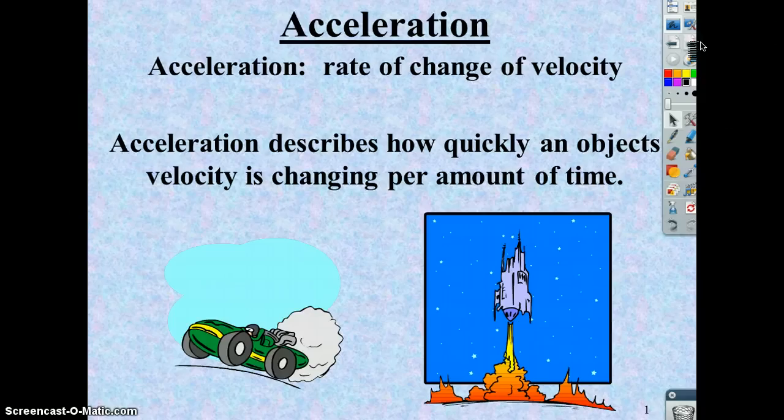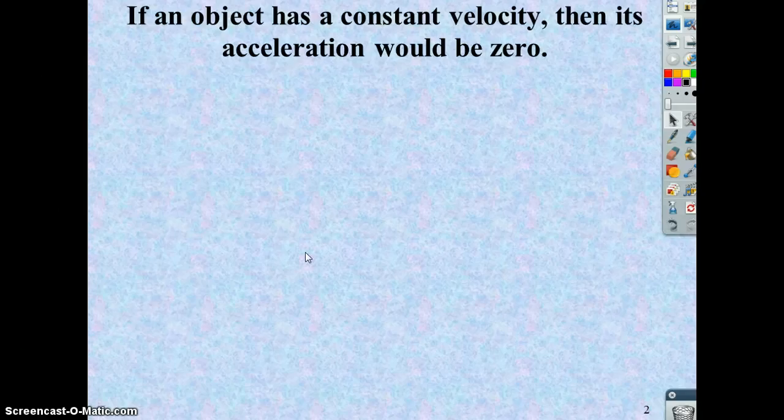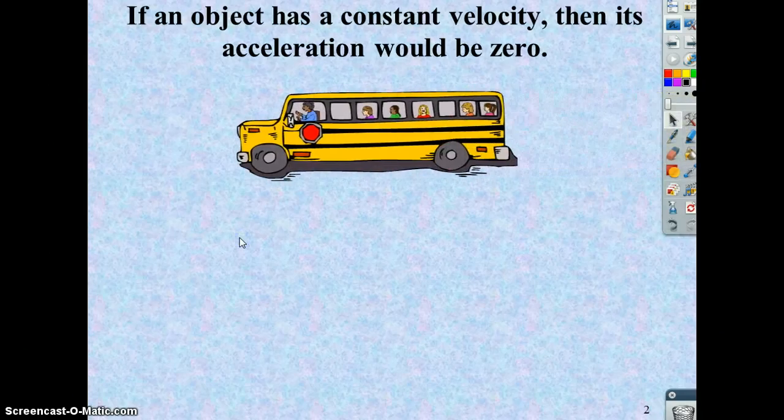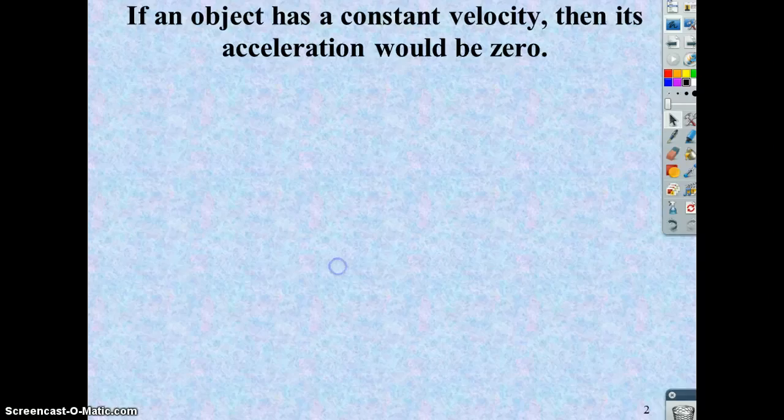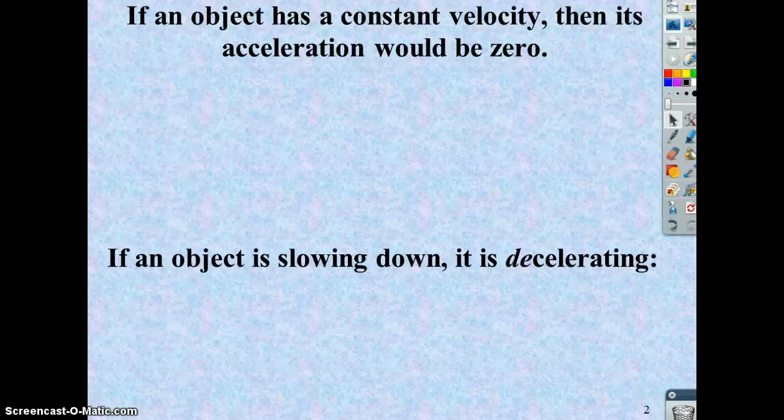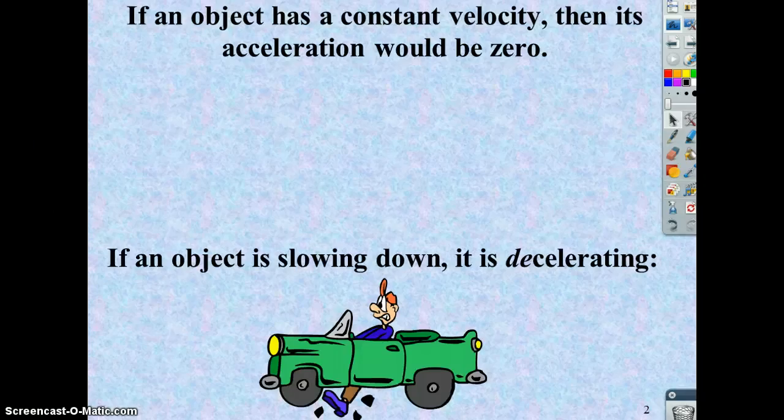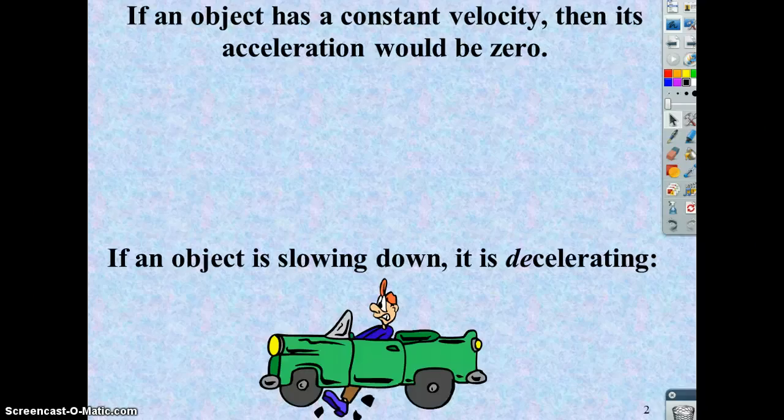If we had an object that came moving along, same speed, same direction, there's no velocity change, so its acceleration would be nothing. On the other hand, if an object slowed down, in this case abruptly, we sometimes say that it is decelerating. So that's when it's losing its speed.